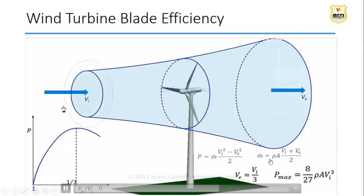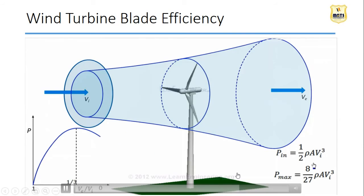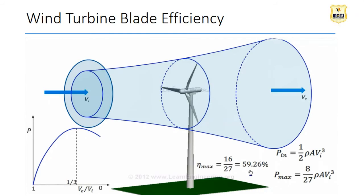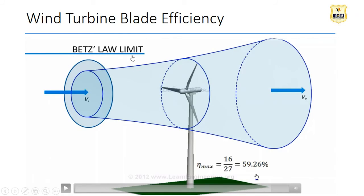From the Betz limit derivation using Bernoulli one-dimensional analysis: V_exit equals V_inlet divided by 3 at maximum power condition. Power maximum equals (8/27)ρAV³. The maximum theoretical efficiency of a three-axis wind turbine is 59.26%. In practical terms, accounting for drag and friction, we get around 40-42% efficiency. This is the Betz limit law - all horizontal axis wind turbines operate within this Betz limit.